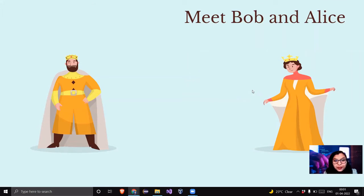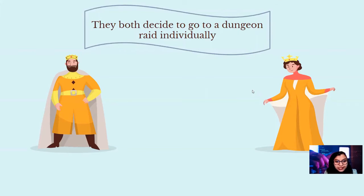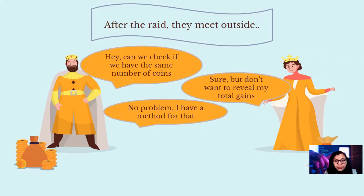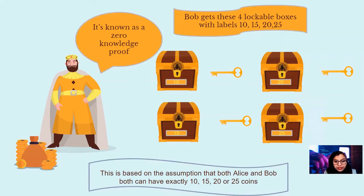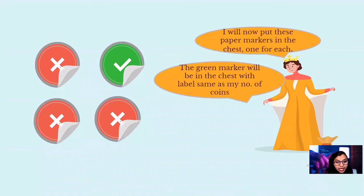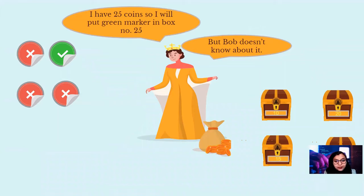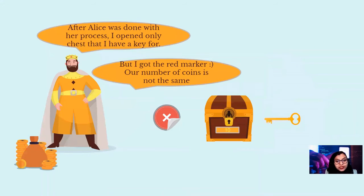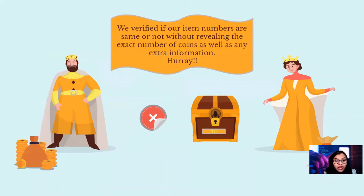Let's take an example. Here are Bob and Alice — they will help us understand ZKP. Bob and Alice decide to go to a dungeon raid individually. Afterwards, they want to see if their number of coins is the same or not, without revealing any other information about their hauls. Considering they can have coins in the range 10 to 25, Bob pulls out four lockable boxes with labels. Bob keeps only the key to the box whose label number matches his number of coins — that is, box labeled 10 — and throws the other keys away. Alice has different paper markers: a green marker for the box whose label matches her number of coins, and red markers for all the others. Since Alice has 25 coins, she puts the green sticker inside that box and red stickers on all the others. At the end, Bob opens box number 10 with his key and finds a red marker, meaning his number of coins is not equal to hers. But he doesn't know how many coins she has — no other information is revealed. This is what ZKP is.